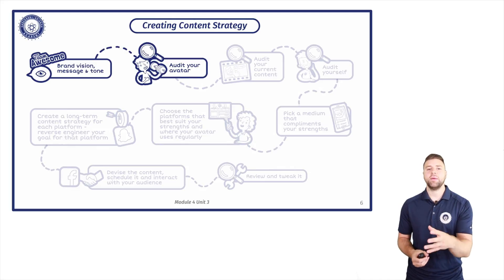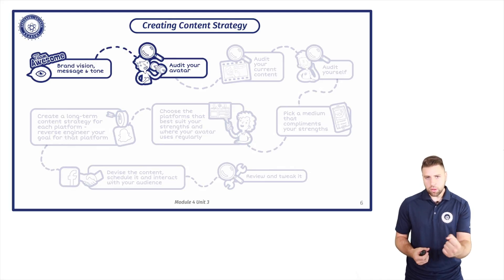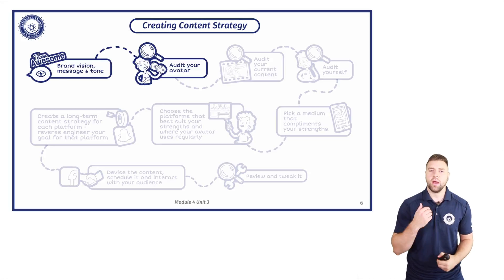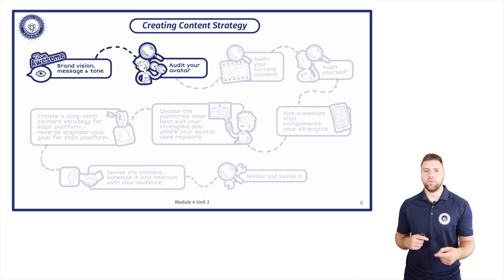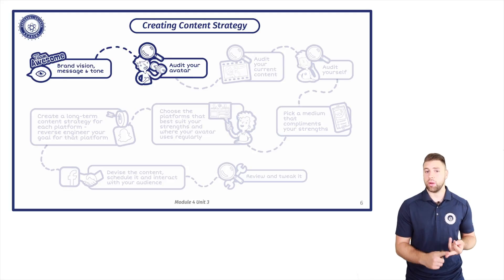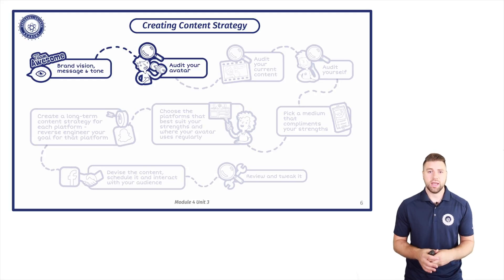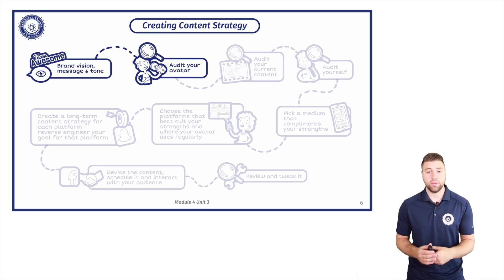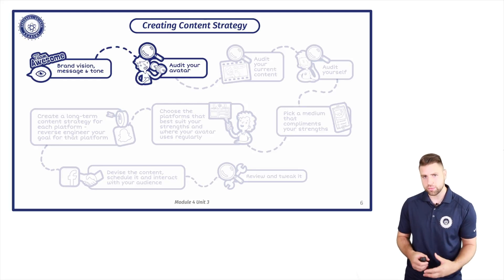The next step is to audit your avatar. Once you've got that avatar, find out what types of content they would like to see. Do they prefer watching video? Do they prefer reading long blog posts? Do they prefer short-form or long-form content? And actually ask them what types of topics they would like you to publish on your social media platforms.